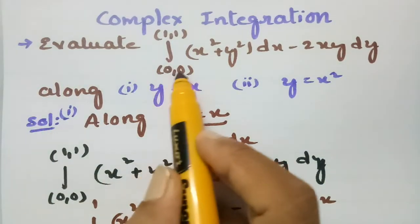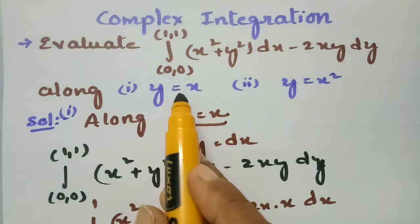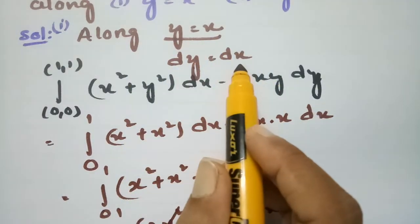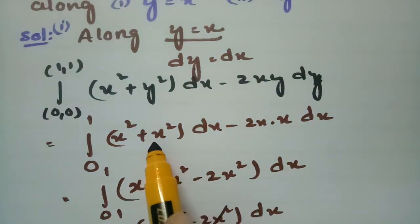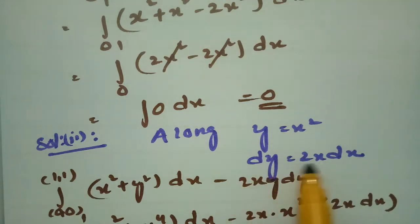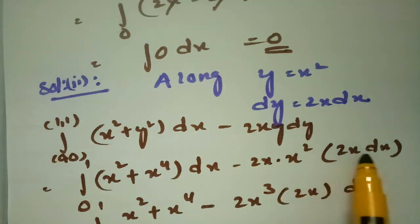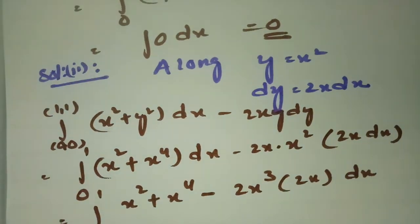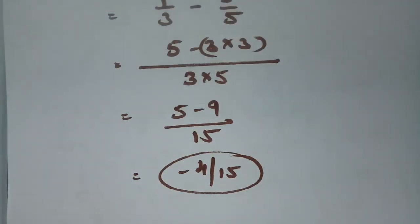Let me explain. We evaluated the integral from (0,0) to (1,1) along y = x and y = x². Along y = x, dy = dx, and substituting y and dy in terms of x gives 0. Along y = x², dy = 2x dx; substituting gives y² = x⁴, dy = 2x dx, and after simplification the answer is minus 4/15.